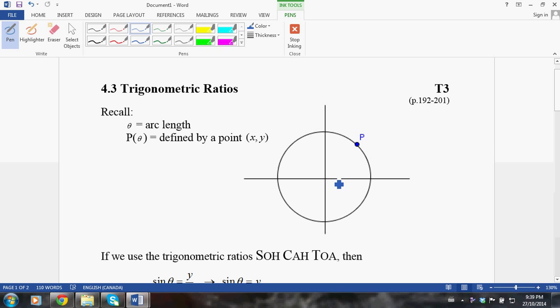This has a radius of 1, and here is any point P. Theta is the arc length, so theta is the amount of this arc length here, so we could say P(θ) is going to equal some ordered pair (x, y). We can calculate the sine, cosine, and tan from this.